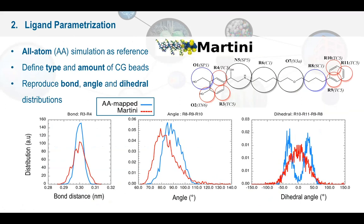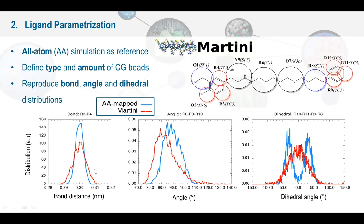For this project I'm using coarse-grained molecular dynamics with Martini 3 as the force field. In Martini parametrization, an atomistic simulation is first performed as reference. Beads are then defined in different sizes, representing two, three, or four non-hydrogen atoms. The type of bead depends on the chemical characteristics of the atoms — for instance, the polarity. The aim is to reproduce the bond angles and dihedral distributions from the atomistic simulation. Here I show three examples where the blue line represents atomistic distributions and the red line represents the coarse-grained Martini model.